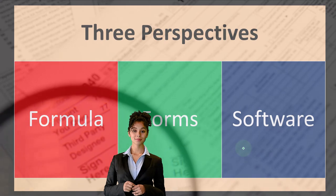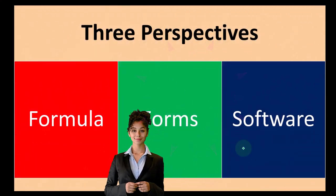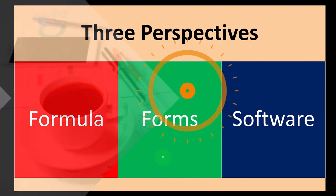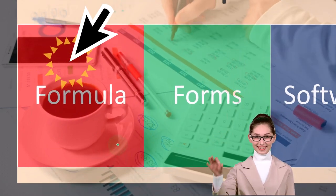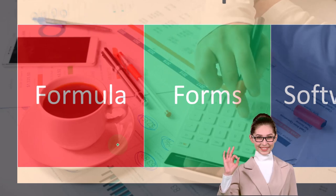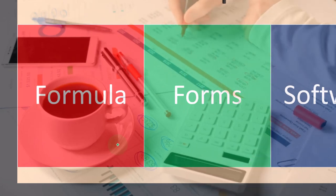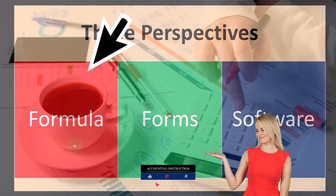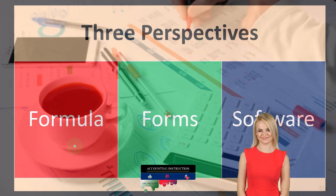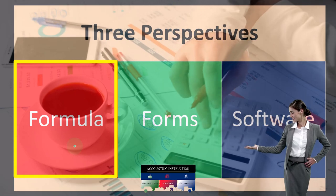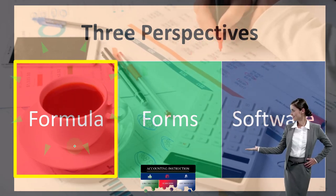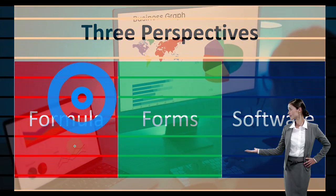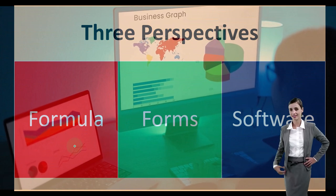Looking at tax law from different angles is good because looking at any problem from different angles allows us to understand the full problem better. And whenever we're solving a particular problem, choosing the correct angle to look at that problem from might make it a little bit easier and more efficient to solve that problem.